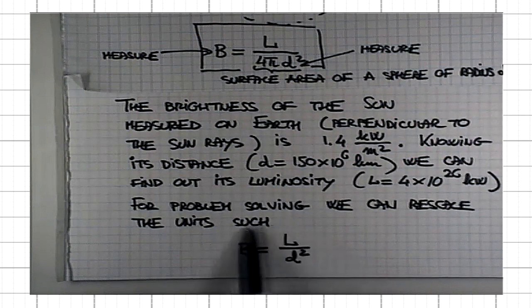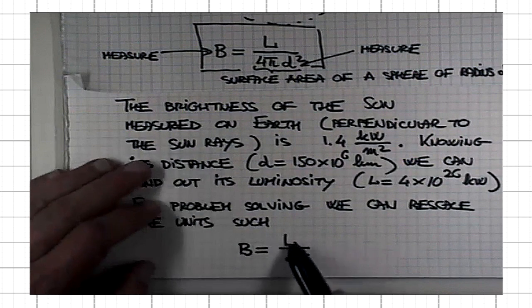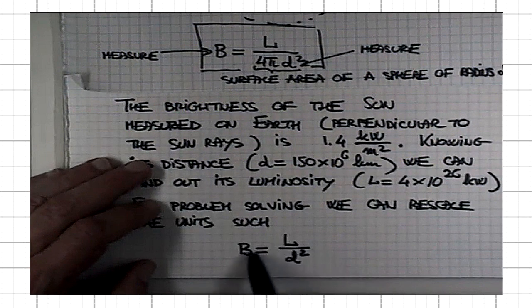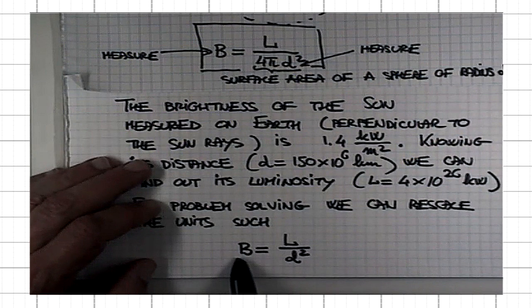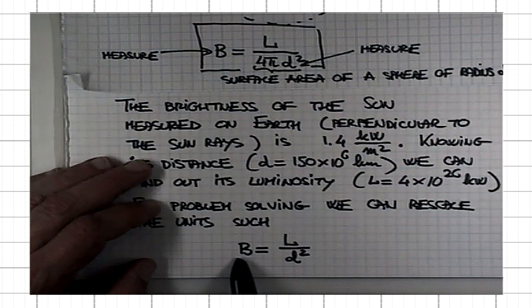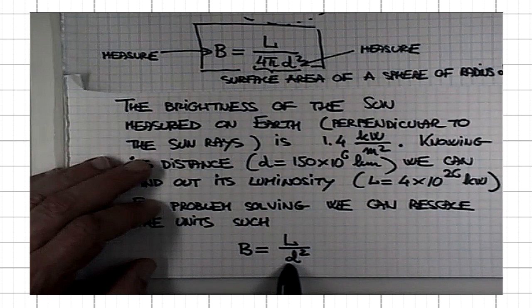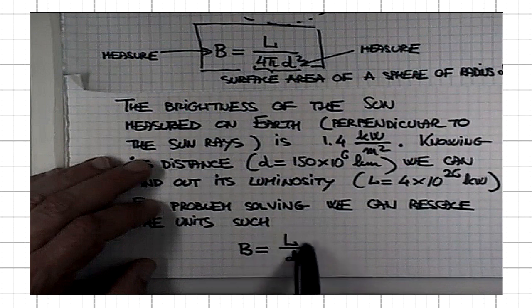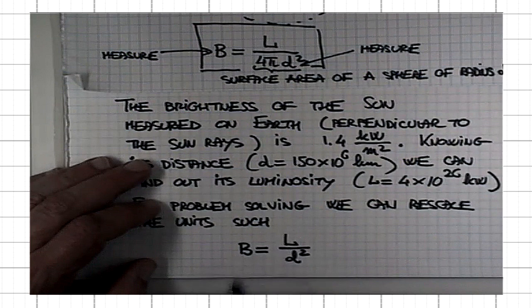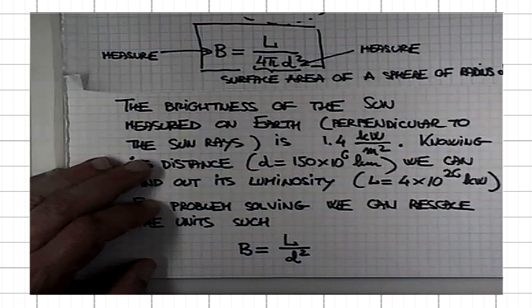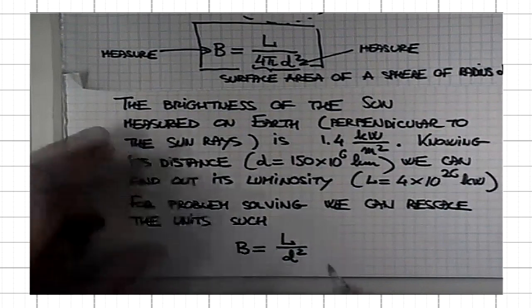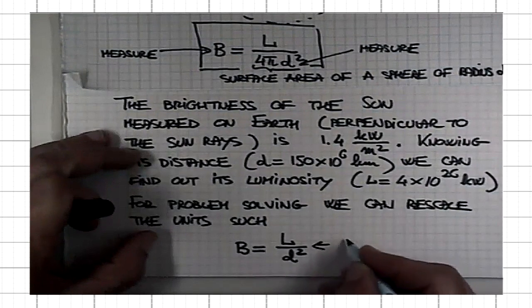Well, this is the same thing here. If for a given source, its distance from us doubles, if I double d, then the brightness is going to drop by a factor of 4. If distance triples for the same source, the same luminosity, the brightness is going to be reduced by a factor of 9. So this is another example of inverse square law.